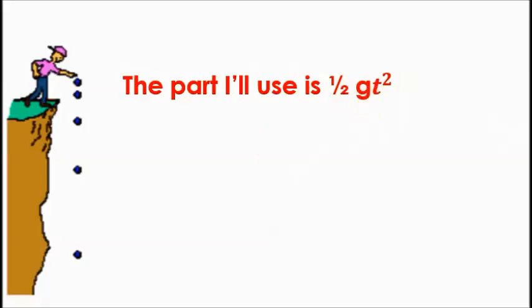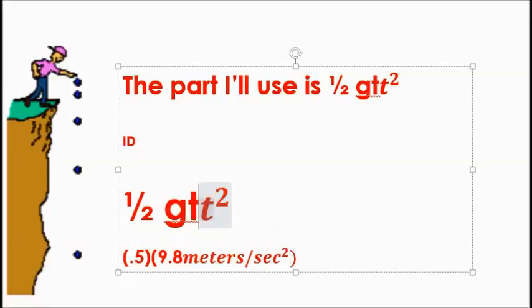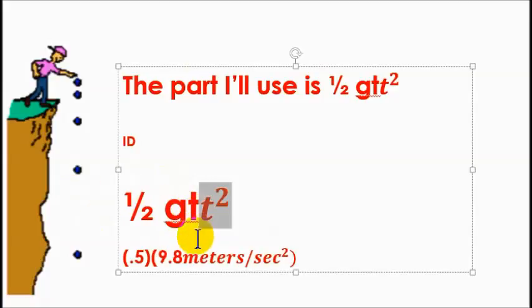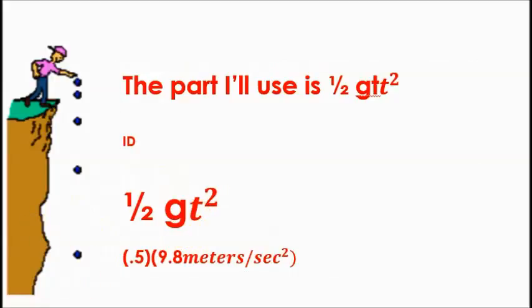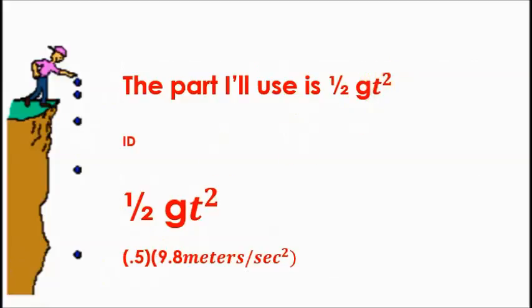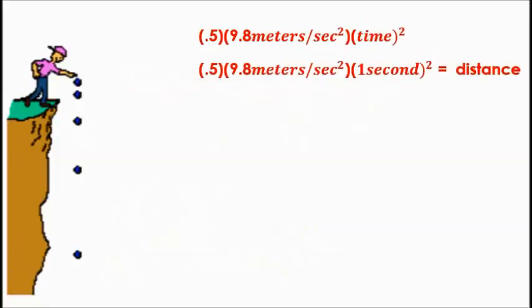So, 1/2 gravitational pull times time squared. I'll identify 1/2. We use 0.5. Gravitational pull is 9.8. So, 1/2 gravitational pull, 9.8 meters per second squared times time. Times time squared. So, if we use that, we can find the distance that an object travels over time. And we can use this to kind of solve our, to get the answer to our question.